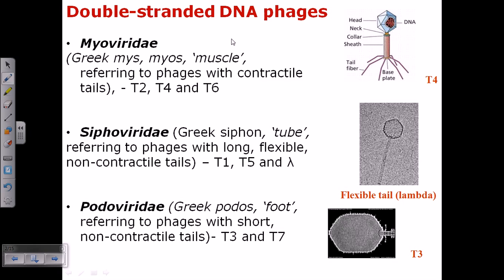T4 bacteriophages are among the double-stranded DNA bacteriophages. Among all double-stranded DNA viruses, bacteriophages reside in three major varieties: Myoviridae, Siphoviridae, and Podoviridae.